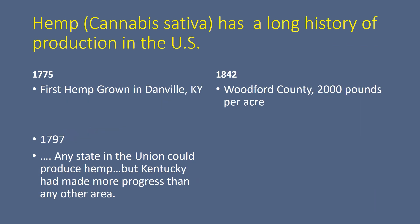In Kentucky we see that the first hemp was grown in 1775, several years before Kentucky became a state, and as we went forward Kentucky became known for the quality of hemp that they produced. Woodford County in 1842 was getting over 2,000 pounds of fiber hemp per acre.